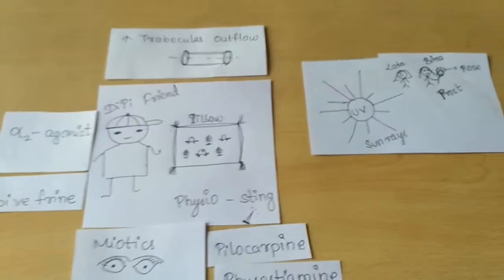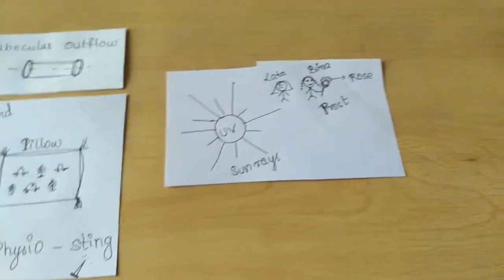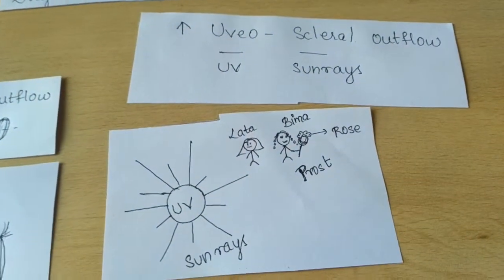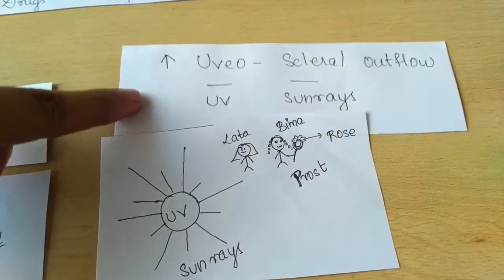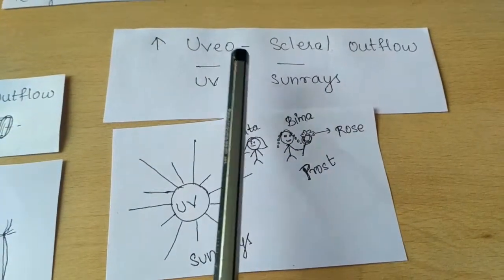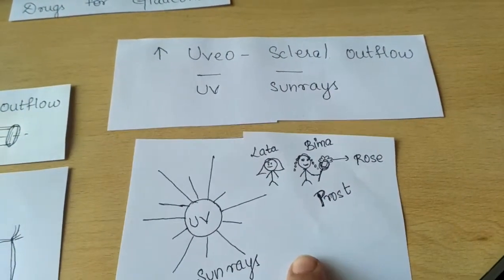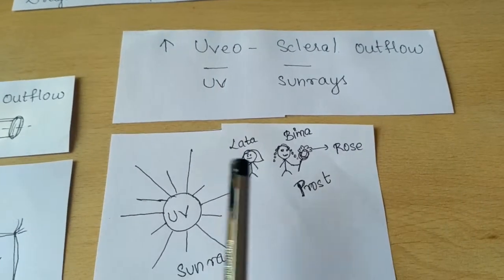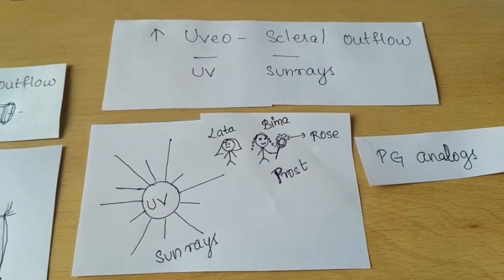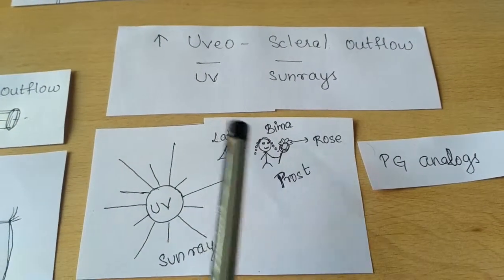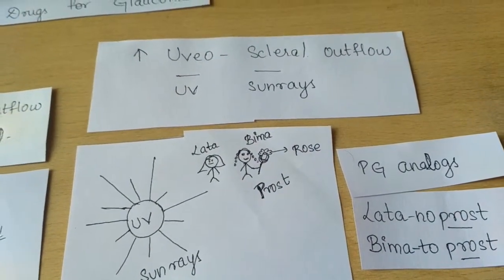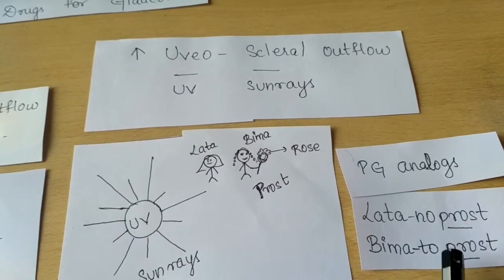Now we will see the other subclassification, that is the drugs which act by increasing the uveoscleral outflow. UV sun rays - instead of UV sun rays, we will write uveoscleral outflow. As we already know, these two girls are staying there as a PG, so the drug subclassification is PG analogues. The drugs are latanoprost and bimatoprost. P is for they are staying as a PG, and rose is for the rose they are carrying in their hands.